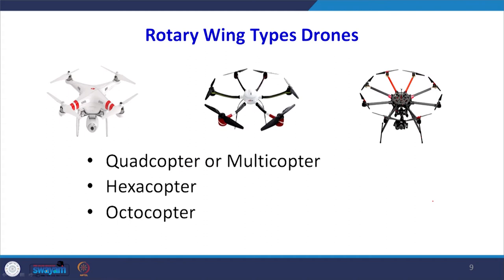When talking of rotary wings, we have under this category a quadcopter or multicopter, which is the most popular unit used widely in different applications. The quadcopter or multicopter has 4 wings. The second is the hexacopter with 6 rotary wings, and the octocopter with 8. There are different combinations, each with its own benefits. The octocopter has much more stability in the air compared to the quadcopter. Cost-wise there is also a difference.